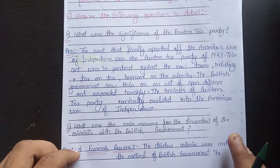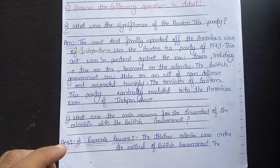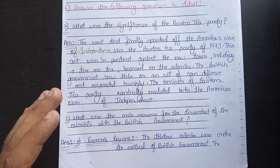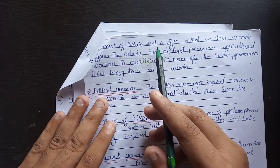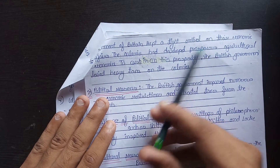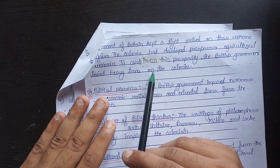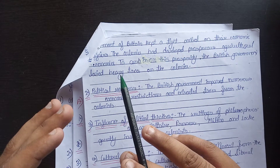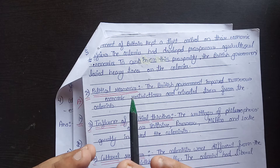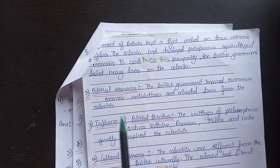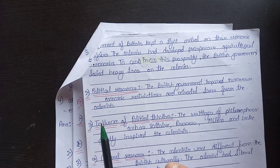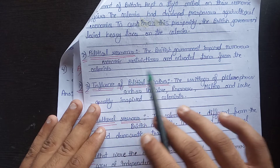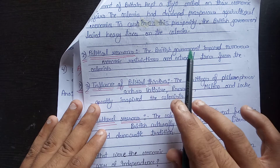What were the main reasons for the discontent of the colonists with the British government? The British government kept tight control on the colonies' economic affairs. The colonies had developed prosperous agricultural economies, and to cash in on this prosperity, the British government levied heavy taxes on the colonies. The British government imposed numerous economic restrictions and extracted taxes from the colonies.